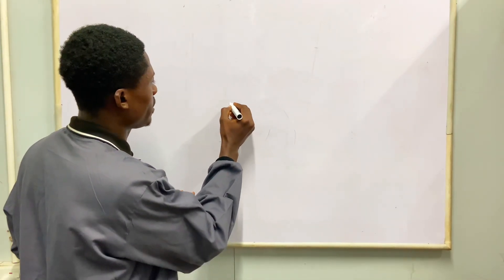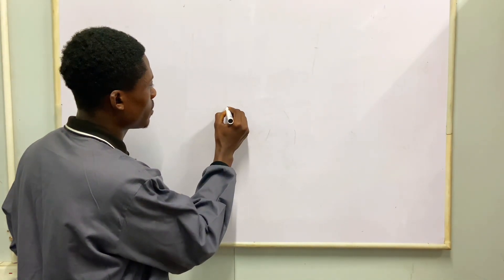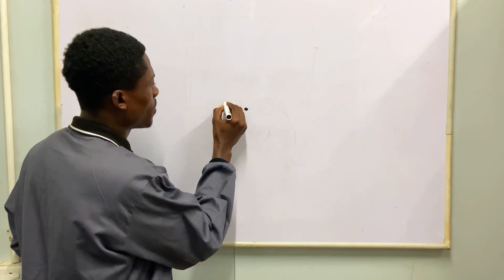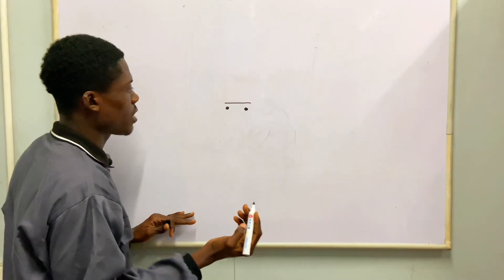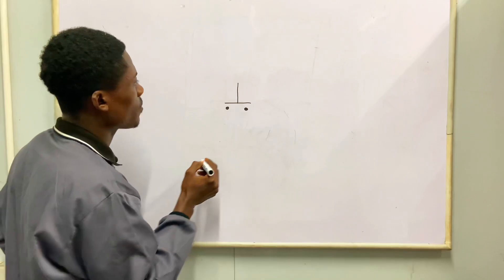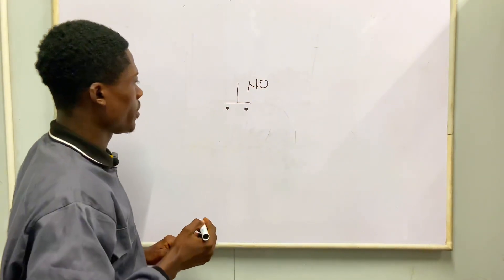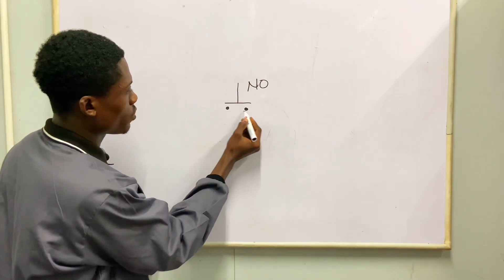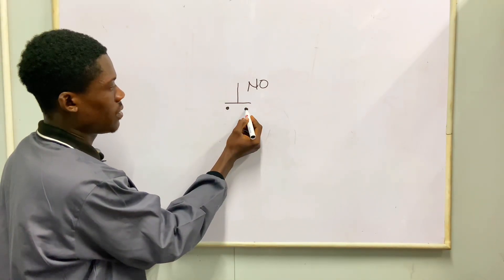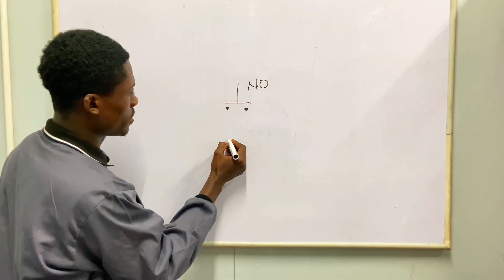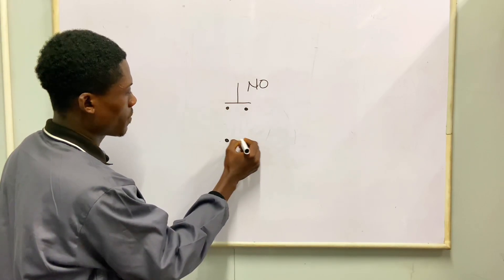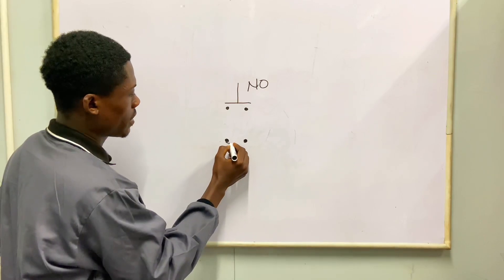We have normally open contacts here — this is how we draw it. For the normally open contact, we have a bar at the top. This is actually a push button. When I push it, the bar will come and link to the contact. This is also how we draw normally closed — down here.